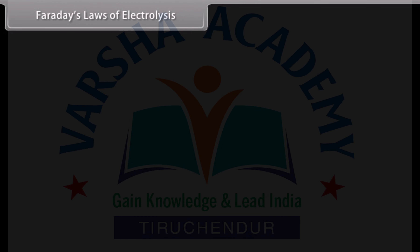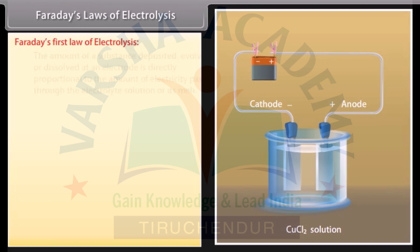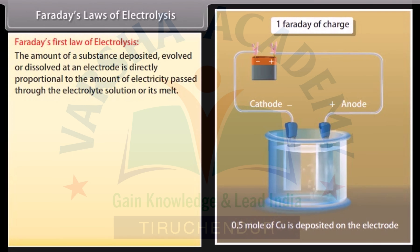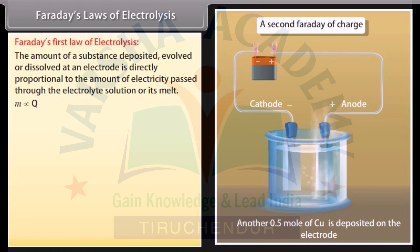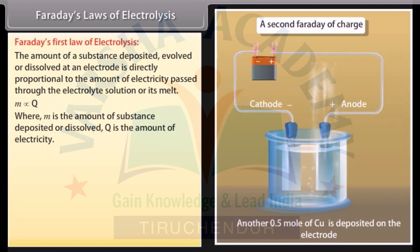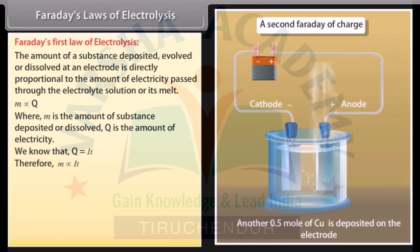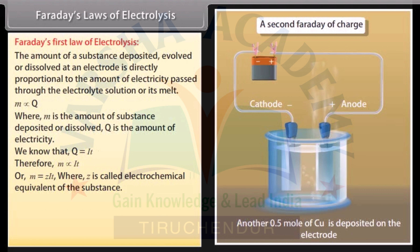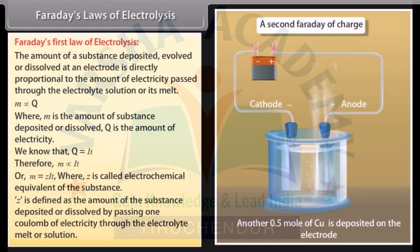Faraday's first law of electrolysis: The amount of a substance deposited, evolved, or dissolved at an electrode is directly proportional to the amount of electricity passed through the electrolyte solution or its melt. M is directly proportional to Q, where M is the amount of substance deposited or dissolved and Q is the amount of electricity. Since Q equals I×T, M equals Z×I×T, where Z is the electrochemical equivalent — defined as the amount of substance deposited or dissolved by passing one coulomb of electricity through the electrolyte.